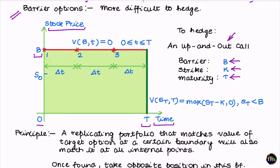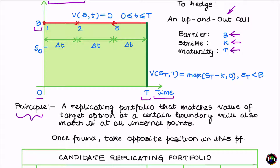This shaded green region is the region of interest over which my option will have a non-negative value. Now let's get to the principle of static replication. The principle is that if I am able to locate a replicating portfolio, that portfolio should exactly match the value of the target option on a certain boundary — in this diagram, the green boundary and the red boundary. By implication, this replicating portfolio will also match the value of the target option everywhere in the green region.